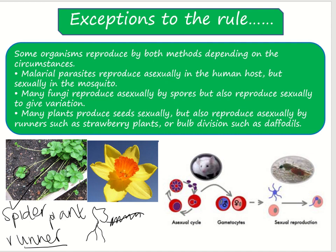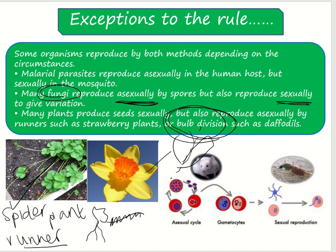Another example is daffodils. Daffodils reproduce asexually by producing bulbs which we can plant. Humans can cut the bulbs in half and plant them separately, resulting in two identical daffodils. This is called bulb division. Lots of fungi also reproduce asexually but can also reproduce sexually — they can do both. Plants can reproduce by bulb division, such as daffodils, or by runners, such as strawberry plants and brambles.